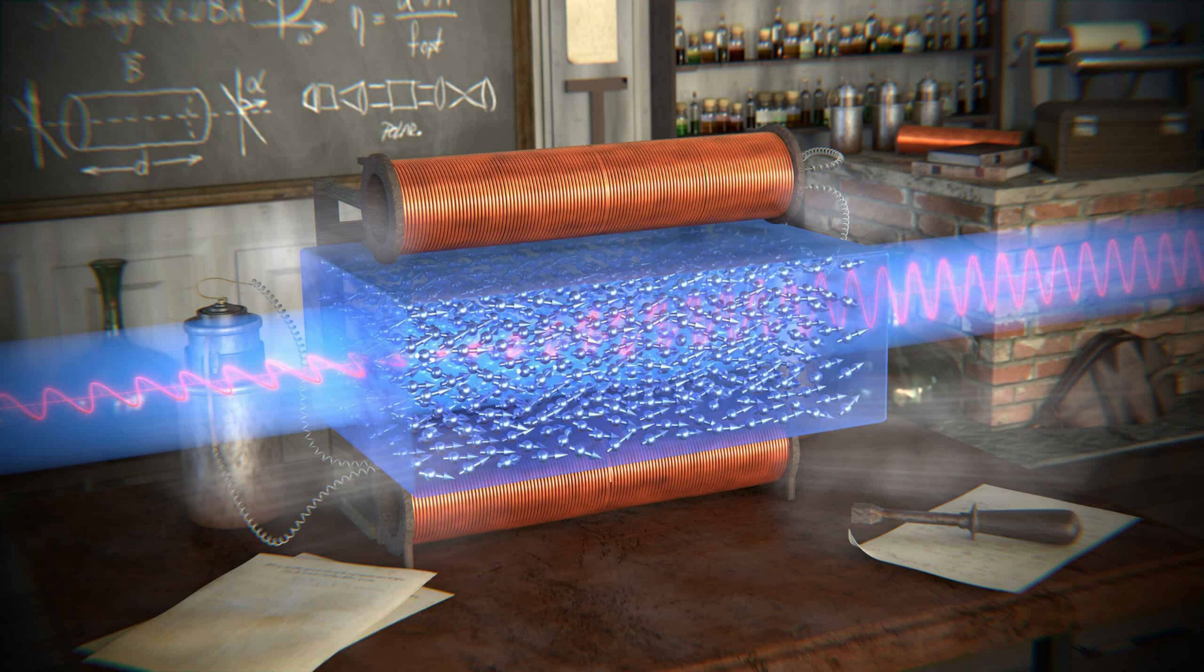Think about what this implies. Light doesn't just illuminate matter or push electrons around with its electric field. Light can exert direct magnetic influence on materials. It's magnetically active.